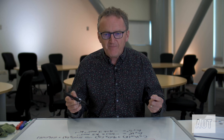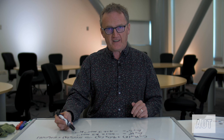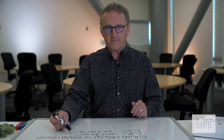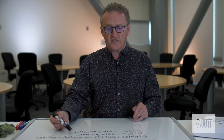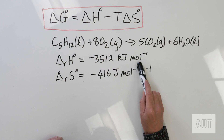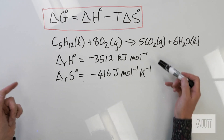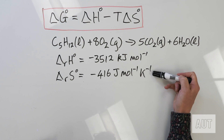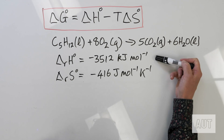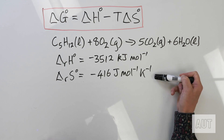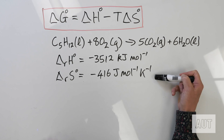Now you might think this looks straightforward — just plug the numbers in. But there is a very, very common mistake here: you have to make sure your units are consistent. The unit of ΔH is kilojoules per mole; the unit of ΔS is joules per mole per kelvin. Those units are inconsistent — you can't have kilojoules and joules in the same equation. You must convert: either ΔH to joules per mole (multiply by 1000), or ΔS to kilojoules per mole per kelvin.